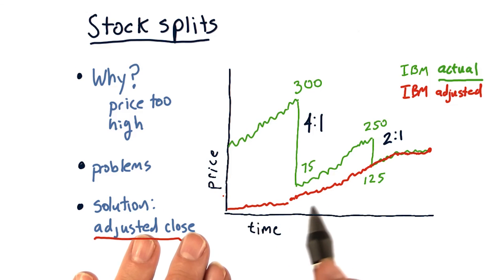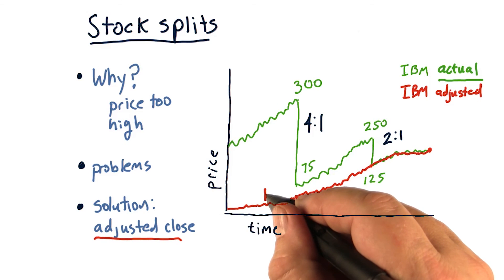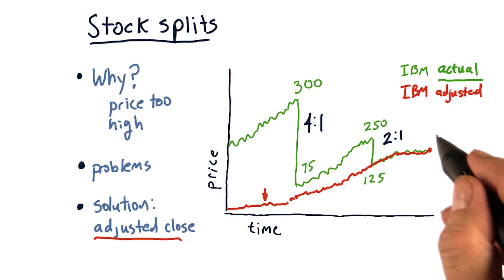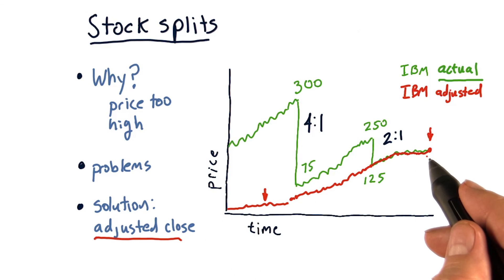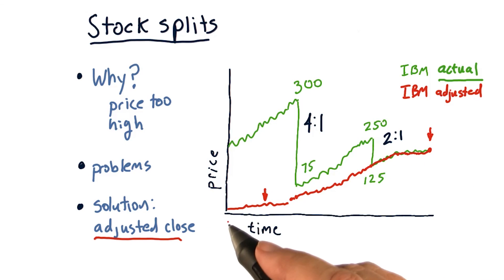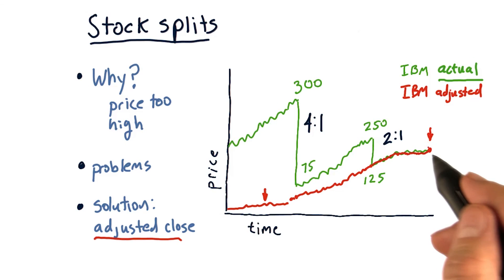So now we have a nice, smooth price timeline without these big jumps. And for instance, if you considered that you bought the stock on this day and held it until this day, the accumulation in value that you see there is accurate. It reflects all those splits and, you know, you would have a lot more shares here. But this would also correctly represent the increase in value.